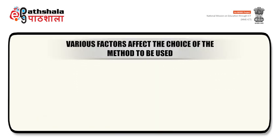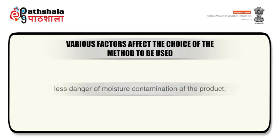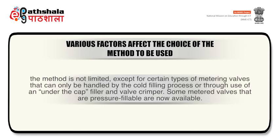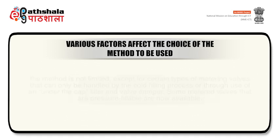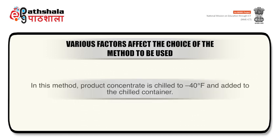Various factors affect the choice of the method to be used. The pressure method is usually preferred over the cold method because of less danger of moisture contamination of the product, achievability of high production speeds, loss of less propellant, and the method is not limited except for certain types of metering valves that can only be handled by the cold filling process or through use of an under the cap filler and valve crimper. Some metered valves that are pressure fillable are now available. Cold filling method is restricted to non-aqueous products and to those products which are not adversely affected by low temperatures in the range of minus 40 degrees Fahrenheit. In this method, product concentrate is chilled to minus 40 degrees Fahrenheit and added to the chilled container.